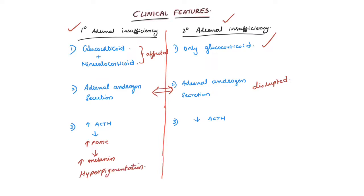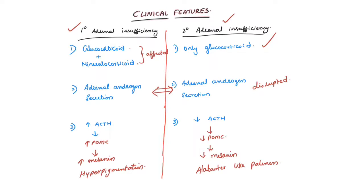Whereas the opposite is true in secondary adrenal insufficiency: because of decreased ACTH and decreased POMC, there is decreased melanin synthesis in the skin, and these patients will have alabaster-like paleness of skin. This is clinically very important to differentiate between primary and secondary adrenal insufficiency.